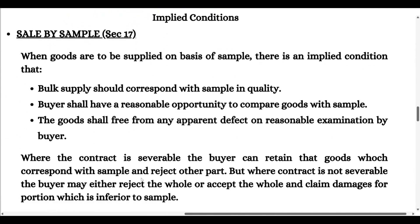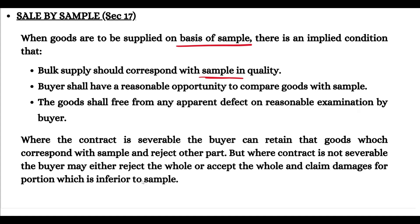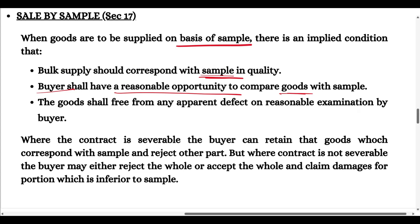The next implied condition is sale by sample. Where the seller is supplying goods on the basis of a sample, the bulk quality must match the sample. It cannot be that the seller gave a superior quality sample but when supplying the bulk the quality is compromised or inferior. The buyer should have a reasonable opportunity to compare the goods with the sample.